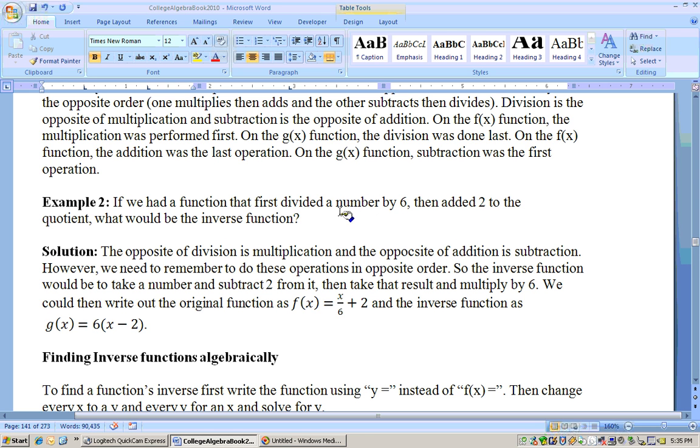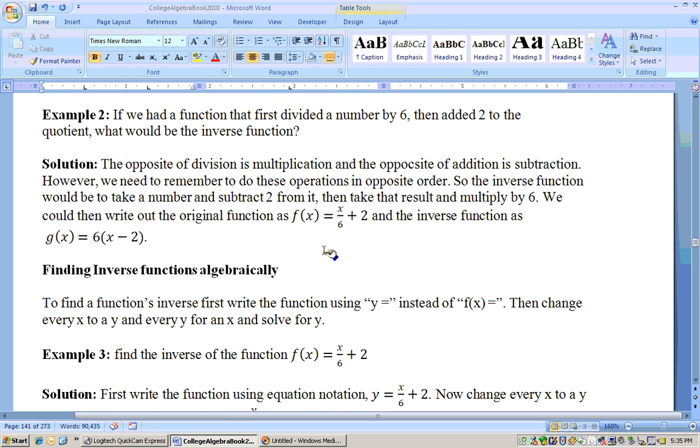It's the opposite thing in the opposite order. If we first divided by 6 and then added 2, then the opposite is subtract 2 and multiply by 6. Here's the original function, divide by 6 and add 2. And here's the other function, subtract 2, and then multiply that by 6.